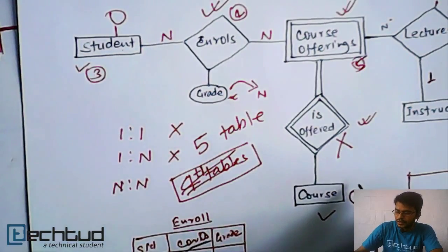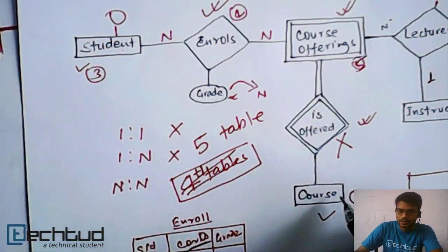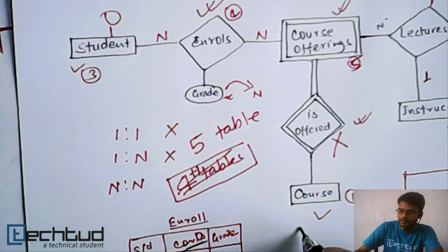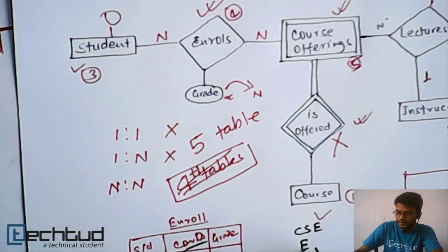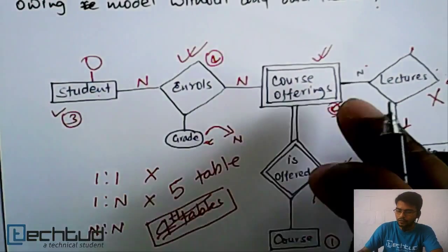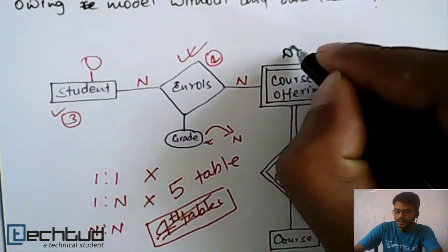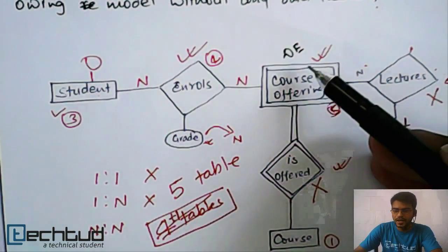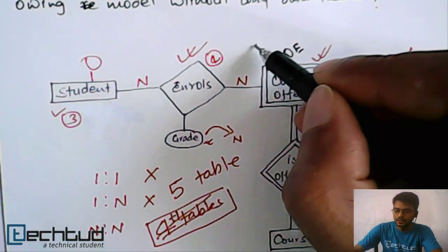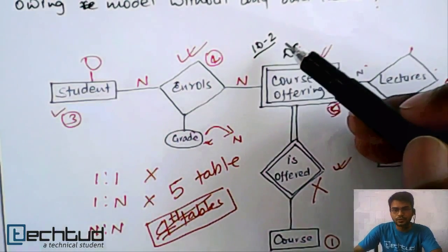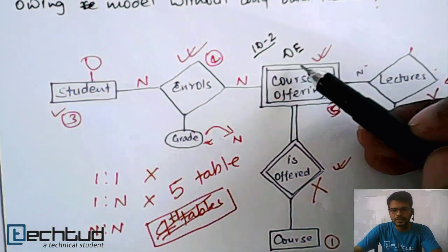Because if you consider in course, there is a course on computer science and electronics, let's say CSE and EC. Both the two courses or departments are offering a course that is digital electronics. Both are offering digital electronics having course ID say ID 2. This is digital electronics, everything is same.